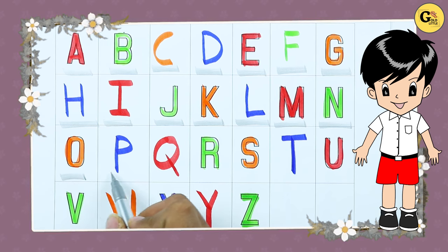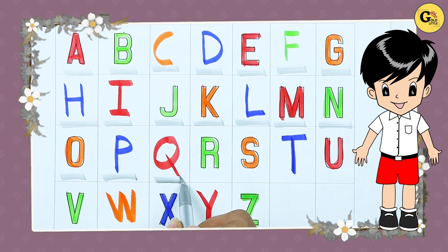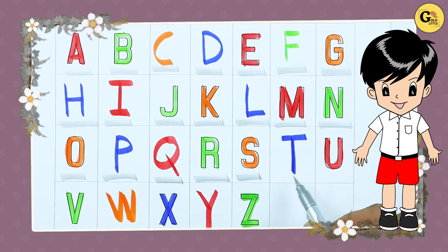O. O for octopus. P. P for parrot. Q. Q for queen. R. R for rabbit. S. S for sheep.